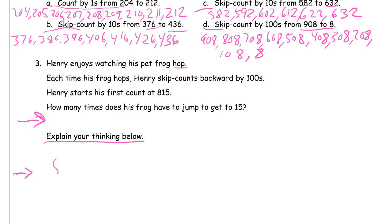So his first count is 815. And he starts his first count at 815, and then his frog hops - 715. Now keep in mind that this 815, that's not a hop, it's a number. This is a hop, right? That's a hop. 715.